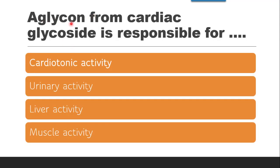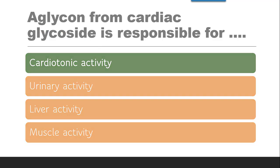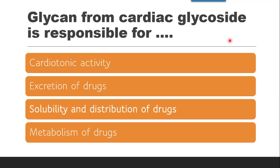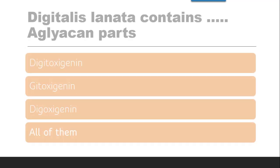The next question is: the aglycone from a cardioglycoside is responsible for what? Aglycone confers cardiotonic property — since it deals with the heart, the correct answer is cardiotonic activity. Then, the sugar moiety from a cardioglycoside is responsible for solubility and distribution of the drug, conferring pharmacokinetic properties.